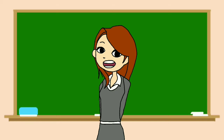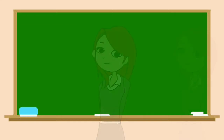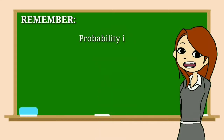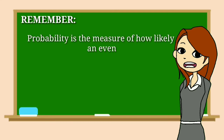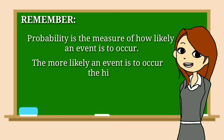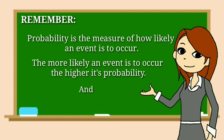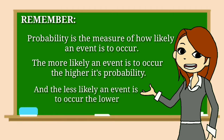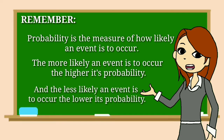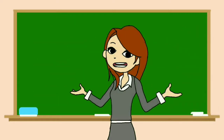But what does probability of a simple event mean? Remember, probability is the measure of how likely an event is to occur. The more likely an event is to occur, the higher its probability. The less likely an event is to occur, the lower its probability.